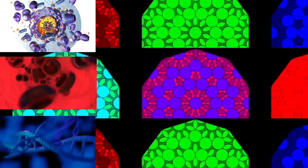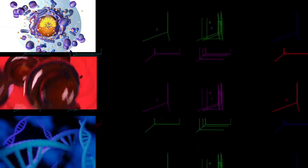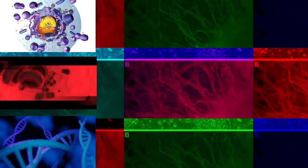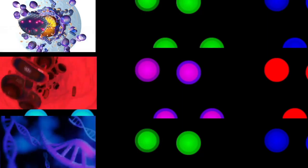During mitosis, the chromosomes, which have already duplicated, condense and attach to spindle fibers that pull one copy of each chromosome to opposite sides of the cell. The result is two genetically identical daughter nuclei. The rest of the cell may then continue to divide by cytokinesis to produce two daughter cells.